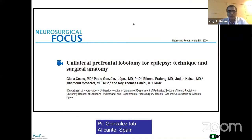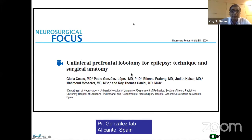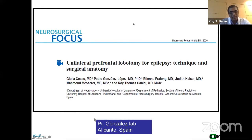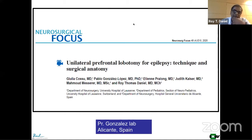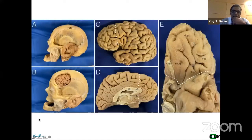A slight variation with some anatomical differences that we recently published is the prefrontal lobotomy. The prefrontal lobotomy is unilateral — not bilateral as was done many years ago for psychiatric disease. This is for epilepsy and it's unilateral, so we don't expect any psychiatric changes in these patients because the prefrontal lobe is already diseased and has no useful function. It's very similar to the anterior quadrantotomy, but there are some interesting anatomical differences.